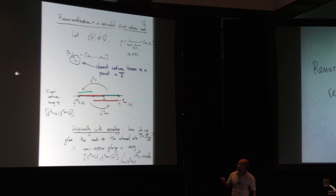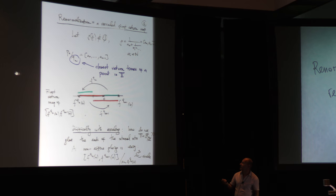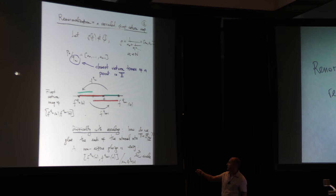The denominators q_N are in particular the closest return times of any point of the circle — not the only closest return times, but in particular the closest return times. If I take my point 0 and consider the F^{q_N} iterate of 0, then between 0 and F^{q_N}(0) there is no smaller iterate. The next closest return F^{q_{N+1}}(0) is on the other side of 0, and they keep alternating. For historical reasons, when considering the first return map, you take it between F^{q_N}(0) and F^{q_{N+1}}(0) — this interval around the origin.